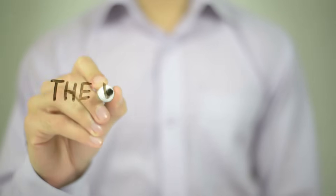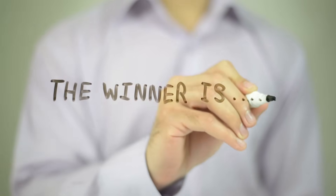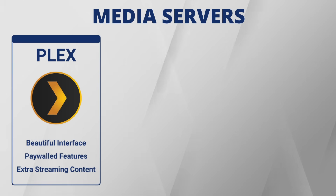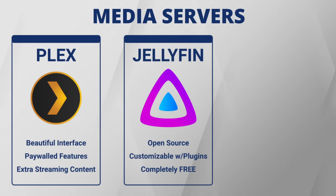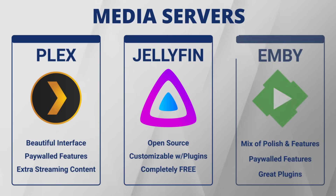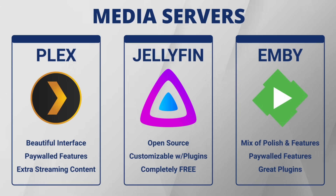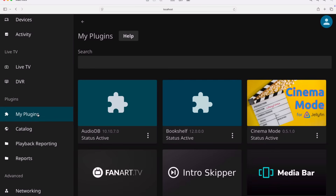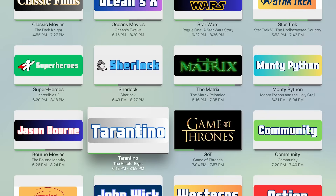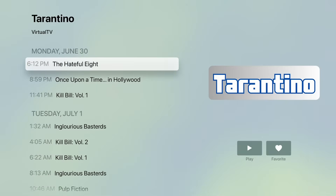So which media server is best for you? It depends. Choose Plex if you want the first-class experience and don't mind paying a premium — it's perfect for users who want streaming content alongside their personal collection. Choose Jellyfin if you're more tech-savvy, love customization, and refuse to pay a subscription for accessing your own media. Choose MB if you want a nice mix of polish, features, and customizability — it's the dark horse that might just surprise you. For me, I'm torn between Jellyfin's freedom and MB's Virtual TV magic. That one plugin might just be worth the entire cost of a subscription — it's that great.